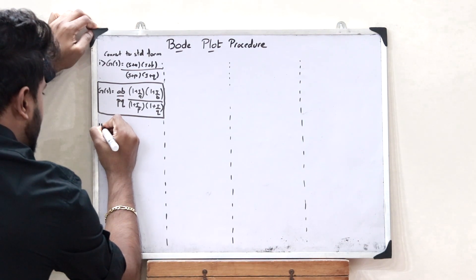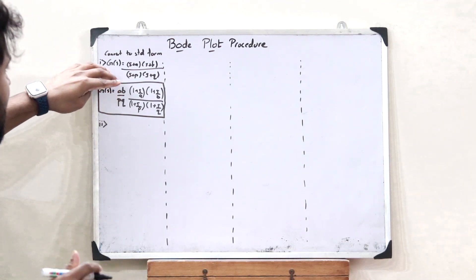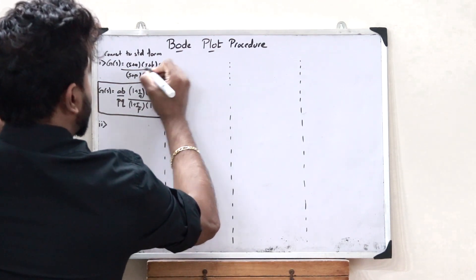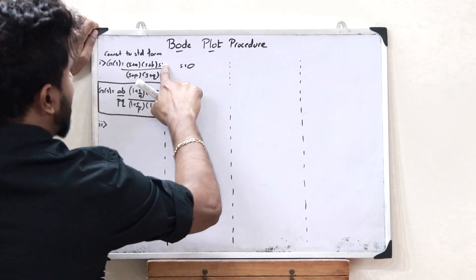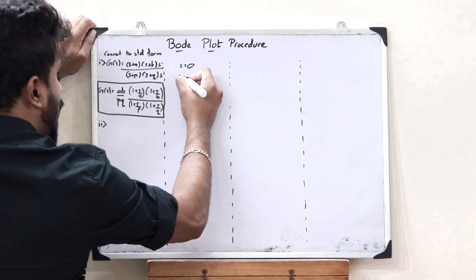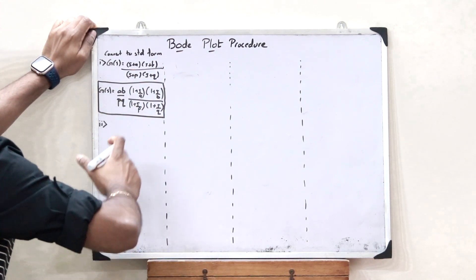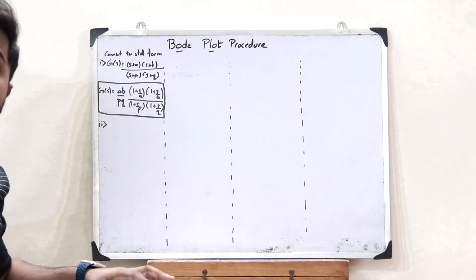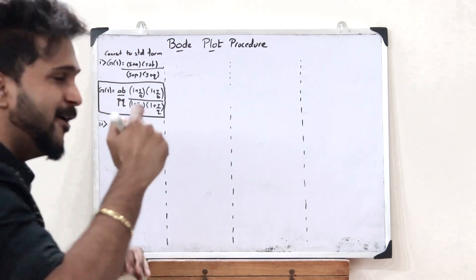The next step, step number 2, is to see if there are any poles or zeros lying on the origin. If we had an S in the numerator, that means we have one zero at the origin (S = 0). If we had an S in the denominator, that means we have one pole at the origin. Based on that, we have to identify if there are any zeros or poles at the origin, from which we can identify the slope of the first line of the Bode plot.